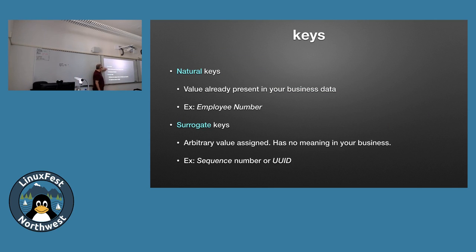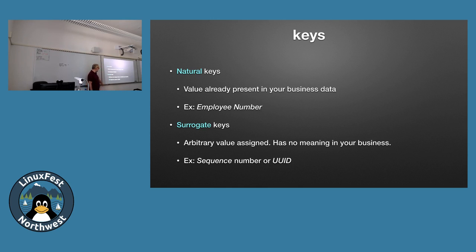There are two kinds of primary keys: natural keys, where the key already exists in your data like an employee number; or surrogate keys, which are arbitrary values you add. I've learned the hard way that natural keys change — two companies merge, employees get new numbers, and then you have to update every foreign key table. My opinion is just go surrogate all the way. Typically those are either a sequence number — 1, 2, 3, 4 — or a UUID. Postgres supports both sequence numbers and UUID as a data type.